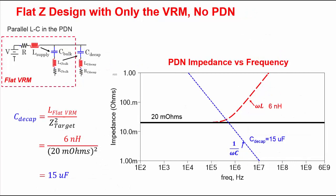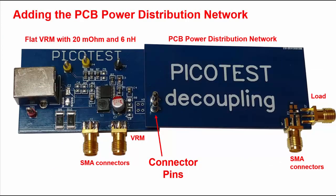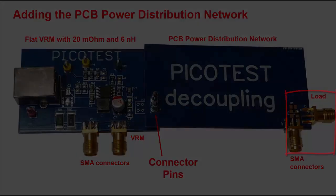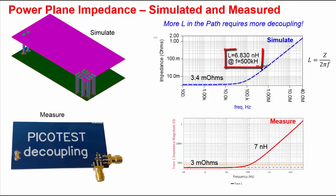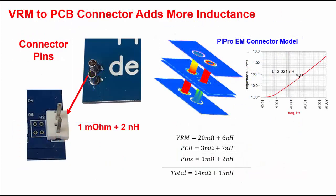We can also visually see the required capacitance by creating an equal and opposite impedance to cancel the inductance. Inductor impedance increases at 6 dB per octave, while capacitor impedance decreases at 6 dB per octave with an intersection close to the target impedance. Here's an example of connecting a VRM to a small printed circuit board plane with solder pads for decoupling capacitors. SMA connectors are also attached for measurement of the impedance at both the VRM and the load. The power plane simulation shows that the plane inductance is approximately 7 nH and the resistance is approximately 3 mOhms. The measurement is in excellent agreement with the simulation. The connector pins also add inductance — in this case, approximately 2 nH.